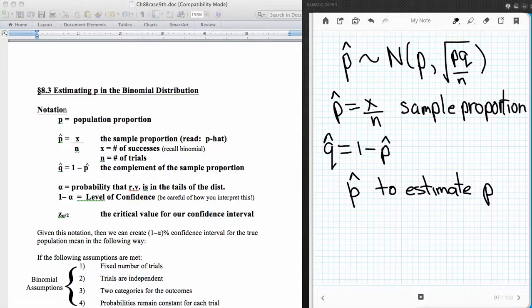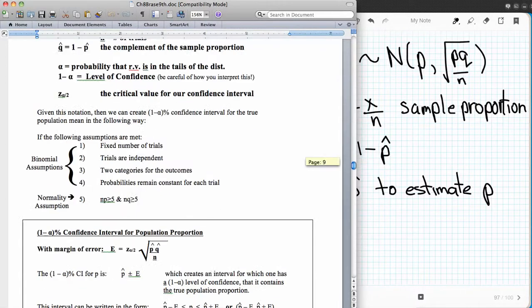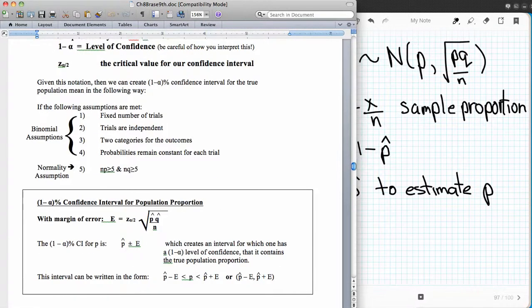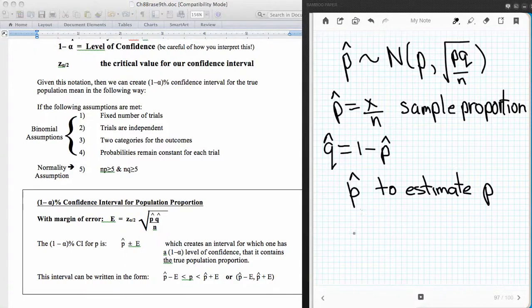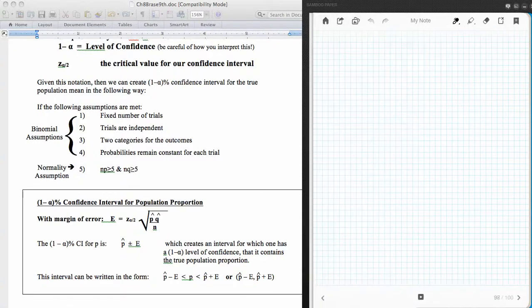Now p-hat is going to be used to estimate the population parameter p, the population proportion. So in order to do this, we must first of all meet the binomial assumptions. So we have to have a fixed number of trials, the trials are independent, there's two categories only for the outcomes, and the probabilities must remain constant on each trial. And then we also must conform to the normality assumption. Remember that the normality assumption is that our n times p and our n times q are both greater than or equal to 5.